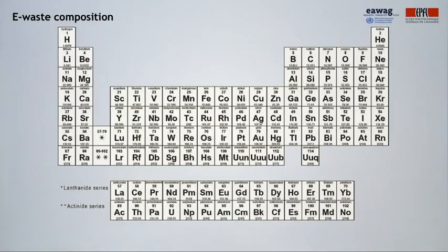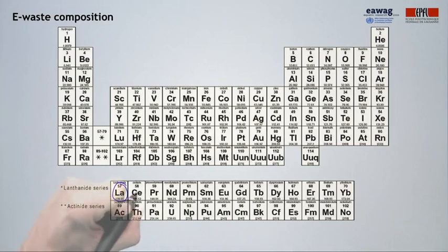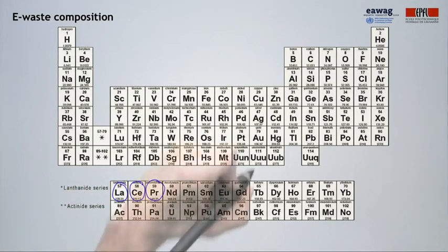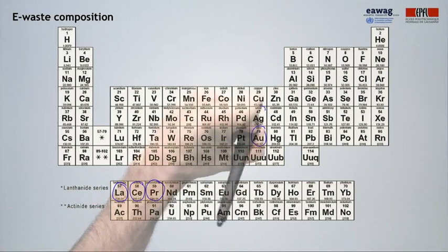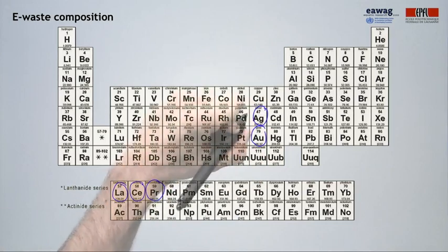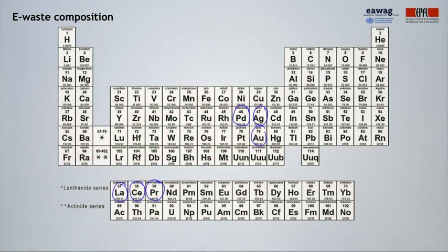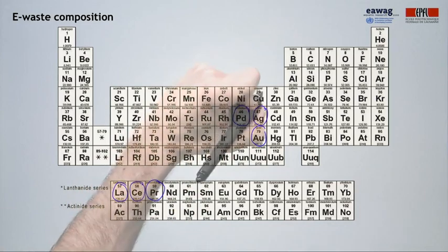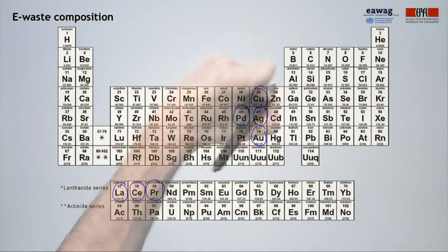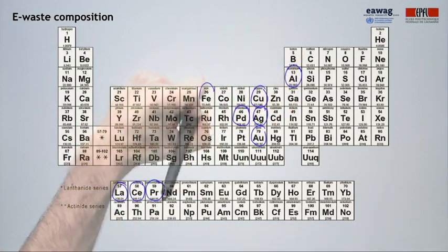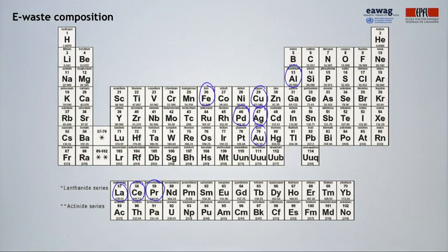Among the substances of particular interest are a very wide range of metals, including rare earth metals such as lanthanum, cerium, and praseodymium; precious metals such as gold, silver, and palladium; or other metals such as copper, aluminum, or iron — which have, together with plastics often used as covers, a high intrinsic value.